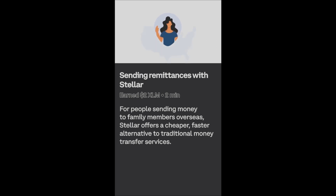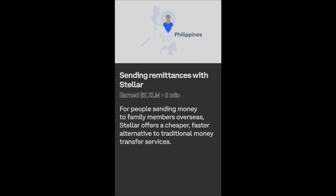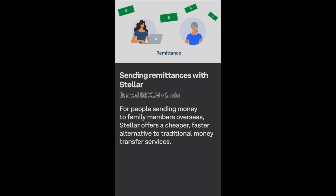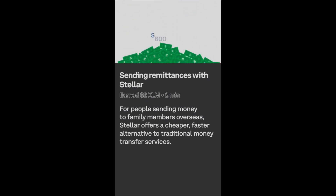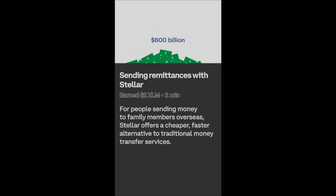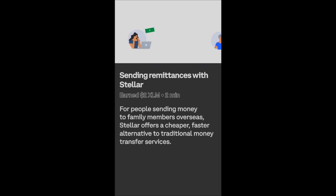This is Maria — she lives in the United States. And this is Maria's mom, Paulina — she lives in the Philippines. Today Maria wants to send her mom twenty dollars. This is called a remittance. Remittances are money sent to support a family member in another country, and they're a very big deal. The World Bank estimates that global remittances are over 600 billion US dollars every year.